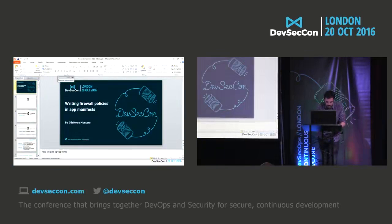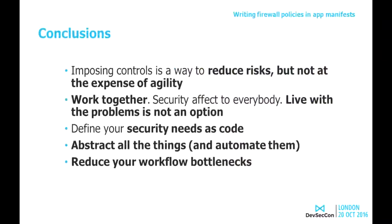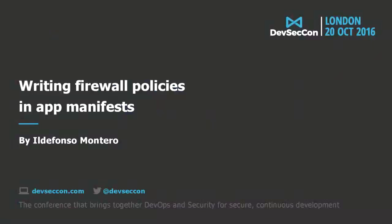Final remarks: imposing controls is fine, and using workflow ticketing systems is good, but they introduce a lot of bottlenecks. From a DevOps perspective: reduce your workflow bottlenecks as much as possible, work together to define what you need — not thinking about how to do it — and with good tooling, you can reduce your bottleneck in network delivery. Thank you so much for your attention. If you have any questions.